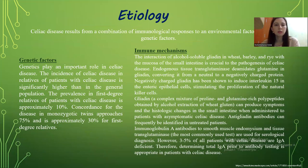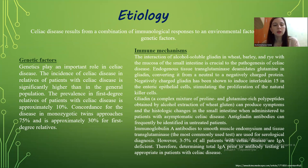Celiac disease results from a combination of immunological responses to an environmental factor and genetic factor. Genetics play an important role in celiac disease. The incidence of celiac disease in relatives of patients with celiac disease is significantly higher than in the general population. The prevalence in first-degree relatives is approximately 10%. Concordance of the disease in monozygotic twins is approximately 75% and approximately 30% for first-degree relatives.